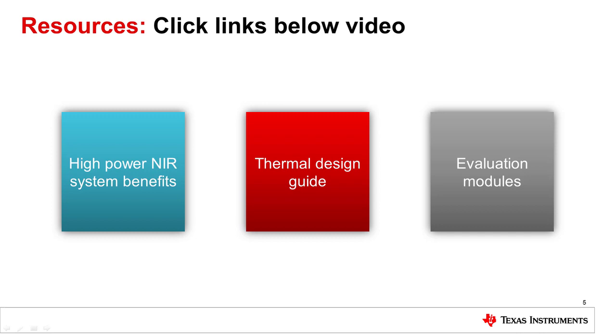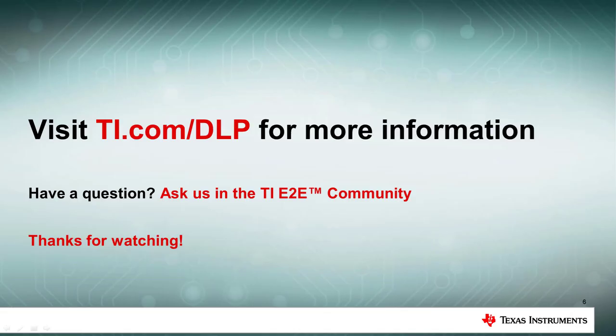To get started with DLP technology suitable for laser marking and coding, click the links below the video and explore products, technical documents, and design guides on TI.com. In summary, DLP chipsets such as the DLP-650 LNIR are well-suited for laser marking systems printing complex grayscale designs or elaborate tracking numbers determined in real-time on production lines. You can learn more by going to TI.com/DLP. Thanks for watching.